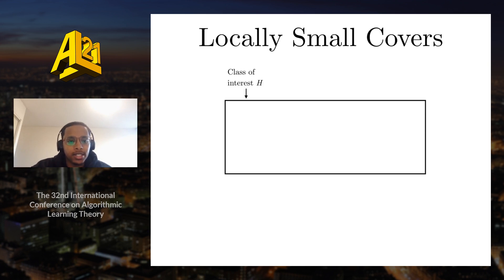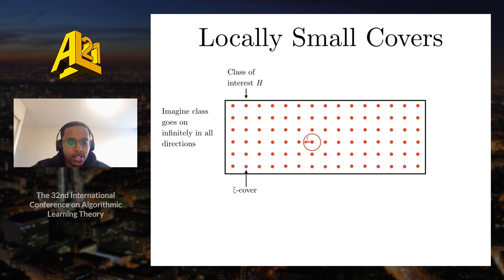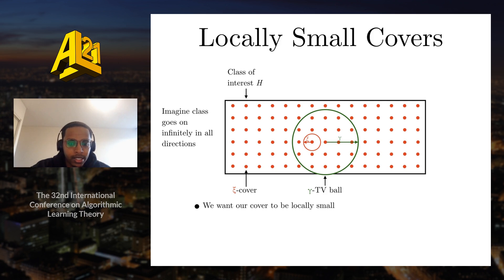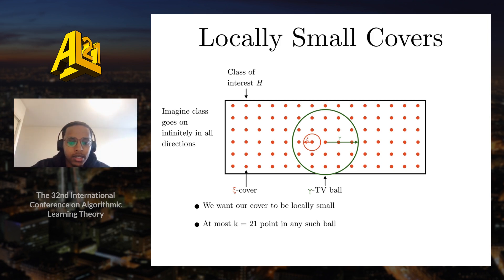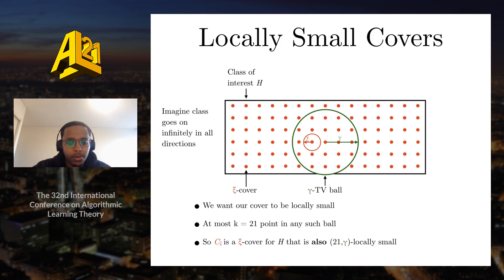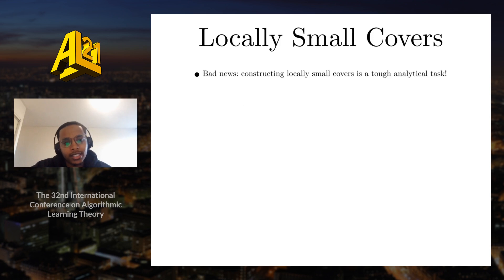To visualize this, consider the class H going on infinitely in all directions. We construct a cover for this class that is locally small as defined. Looking at the γ total variation ball centered at any point in the cover, we can see that regardless of which point we center on, there are 21 points in the ball. So this cover is a cover for H that is also 21-γ locally small.